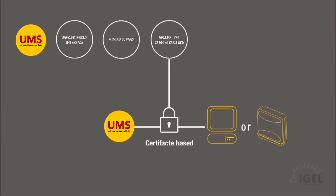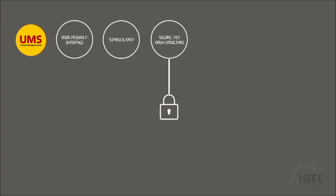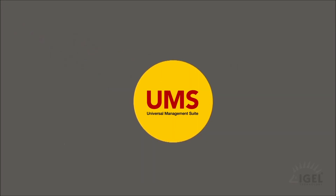The secured connection between the client and the console allows a secure flow of information in the system. The UMS also has a fail-safe mechanism, meaning the system keeps running safely after a connection breakdown or a loss of power during the update process.